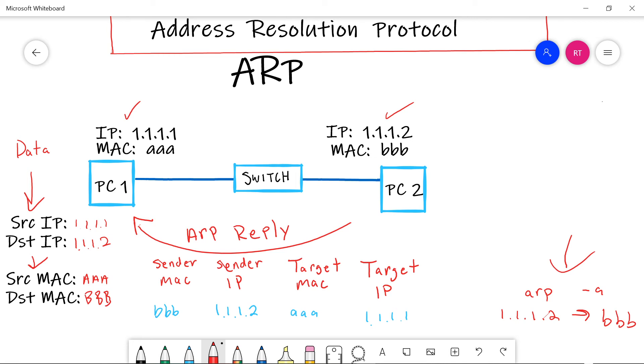Now, during this process, PC two also populated its ARP cache. So when PC two does an ARP dash a, it's going to have an ARP entry that looks like this: 1.1.1.1 maps to MAC address all A's. And that's a detailed overview of how the ARP process works.